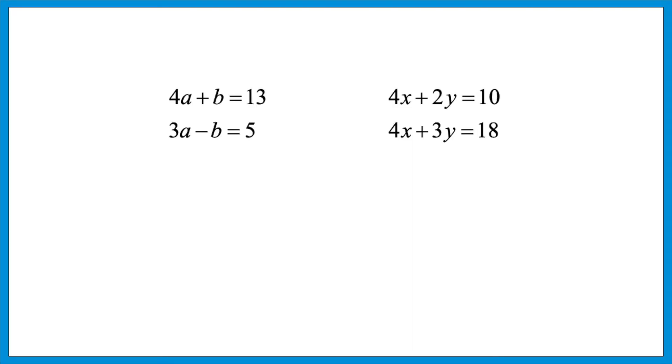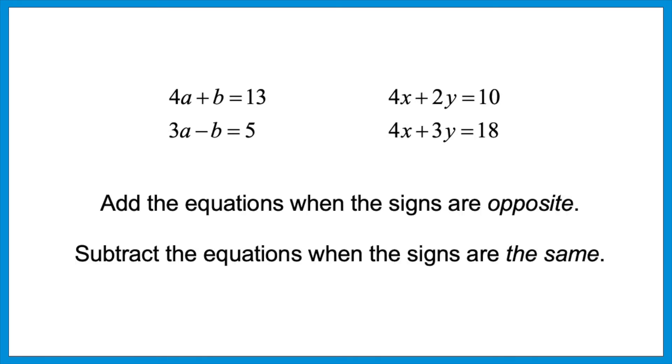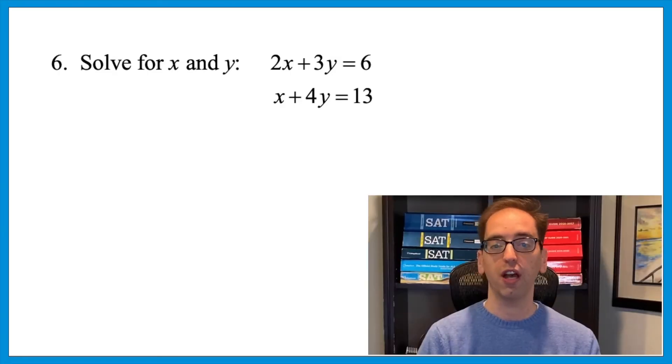Notice the main theme again: take a situation with many variables and rewrite it with one. To do that with elimination, manipulate the equations so like terms are stacked, then get one coefficient to cancel out. Whether you subtract or add depends on the signs: add the equations when the signs are opposite, subtract when the signs are the same. This is an extremely popular topic on both tests.